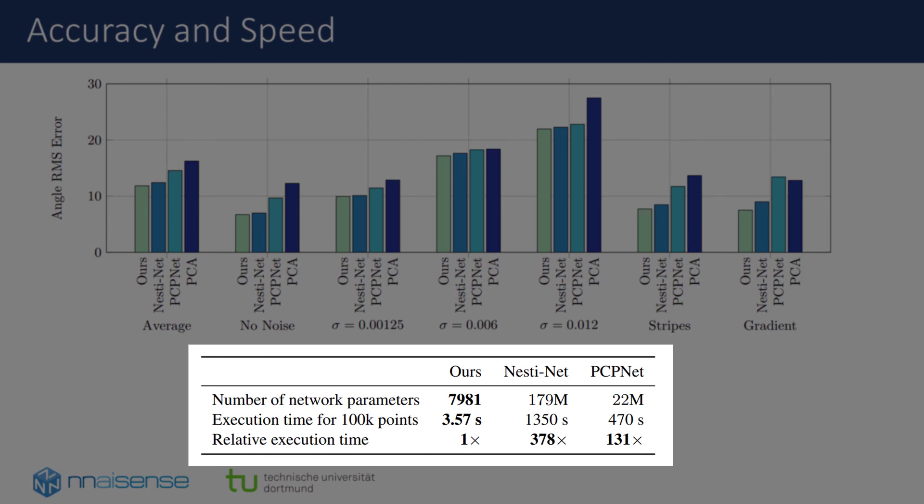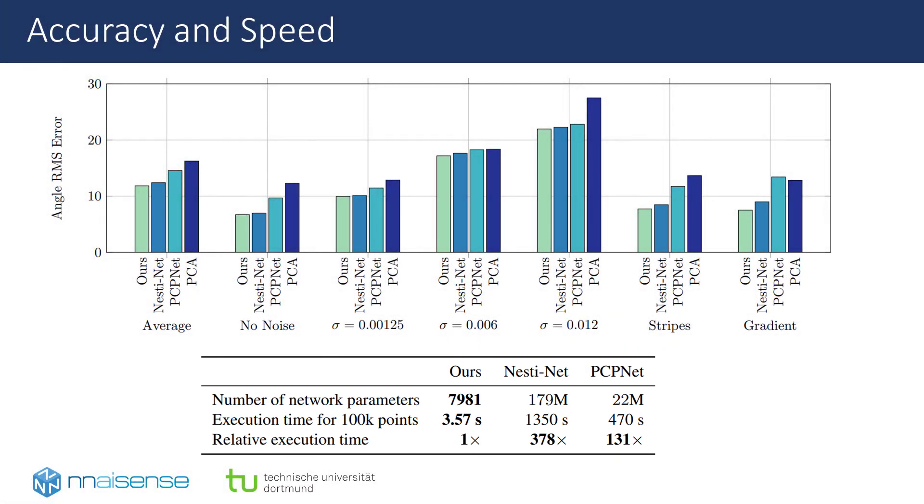In comparison to related deep learning approaches which rely on large end-to-end networks with many more parameters, we are orders of magnitude faster. We can attribute that to the parallel nature of our algorithm and the much smaller network size.